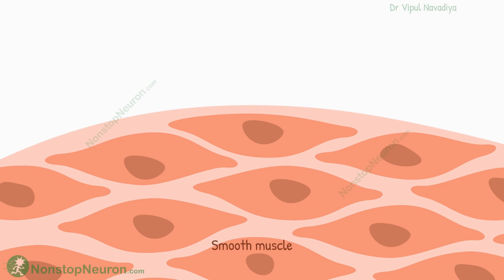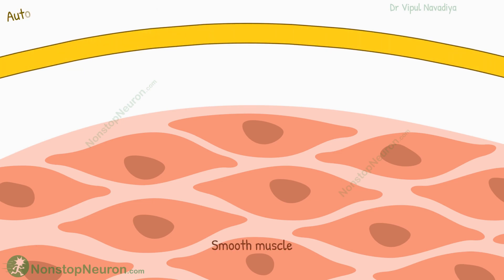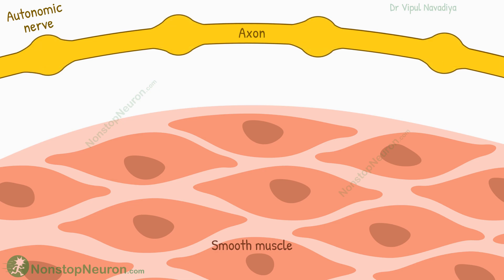Smooth muscles are innervated by autonomic nerves, rather than somatic nerves that supply skeletal muscle. The axon of these neurons forms multiple swellings along its axis, called varicosities, and they make synaptic contact with the muscle. The formation of varicosities along the axon allows the neuron to establish connections with multiple smooth muscle cells simultaneously.